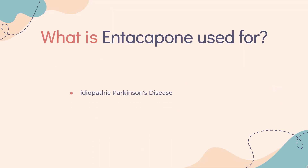What is Entacopone used for? It is used as an adjunct to Levodopa/Carbidopa in the symptomatic treatment of patients with idiopathic Parkinson's disease who experience the signs and symptoms of end-of-dose wearing off.